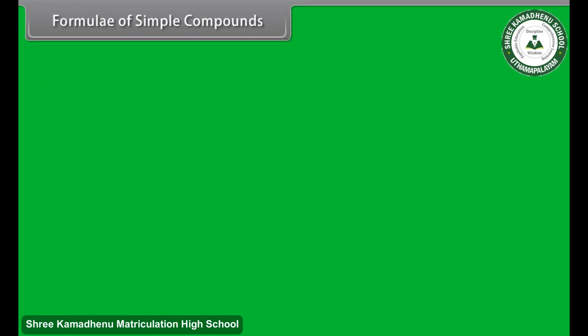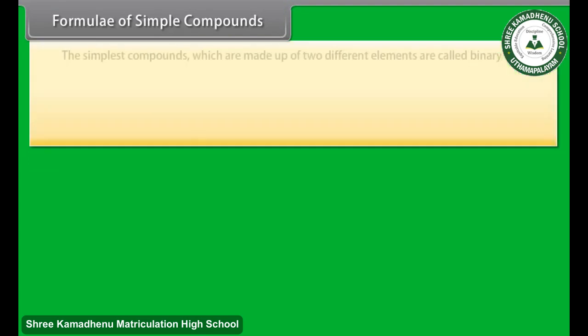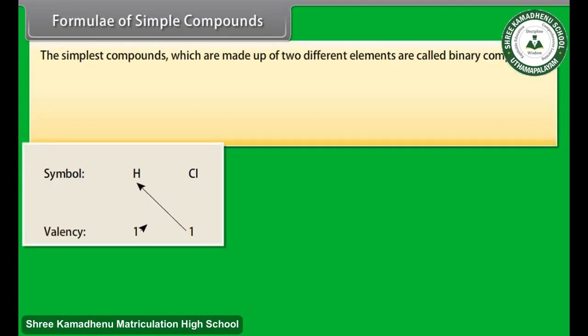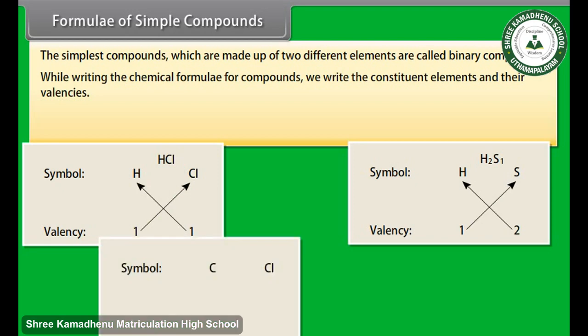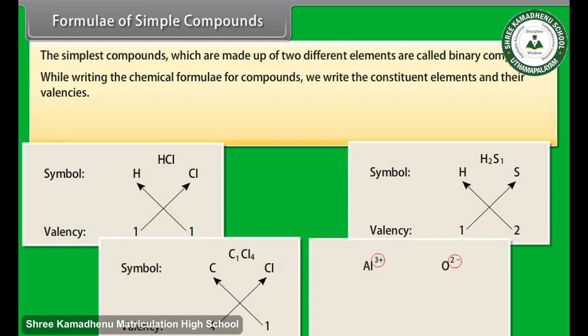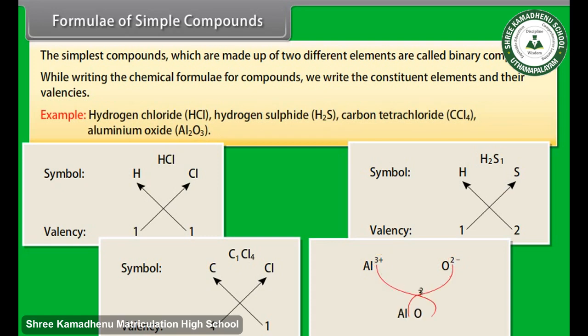Formula of simple compounds: The simplest compounds which are made up of two different elements are called binary compounds. While writing the chemical formula for compounds, we write the constituent elements and their valencies. Examples: hydrogen chloride (HCl), hydrogen sulfide (H₂S), carbon tetrachloride (CCl₄), aluminium oxide (Al₂O₃).